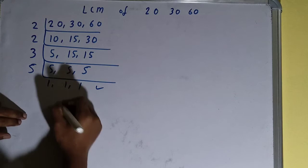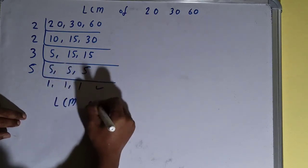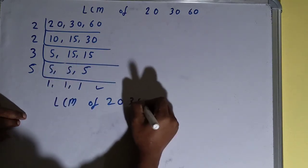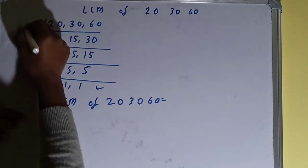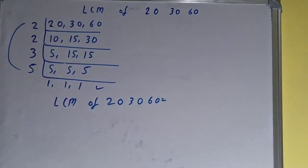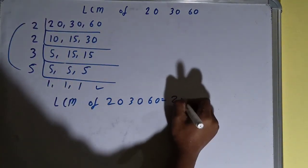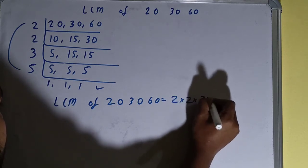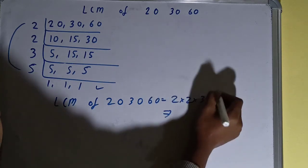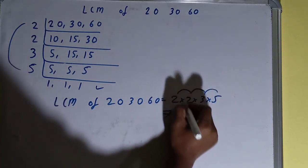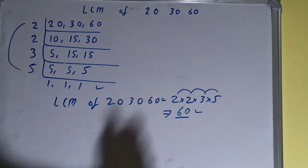And we need to do one last thing, that is LCM of 20, 30, 60 is equal to multiply whatever you have got on the left-hand side, that is 2 × 2 × 3 × 5. So the answer will be 5 × 3 is 15, × 2 is 30, × 2 is 60.